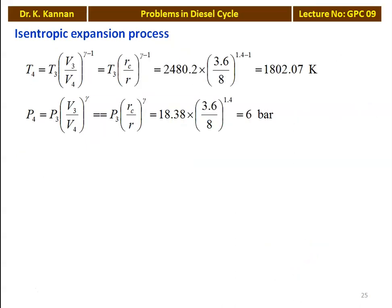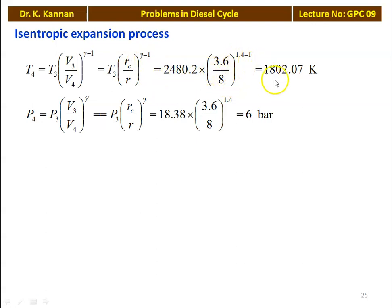For the isentropic expansion process, T4 equals T3 into (V3/V4) to the power gamma minus 1, where V3/V4 equals Rc/R: 2480.2 into (3.6 divided by 8) to the power 0.4 equals 1802.07 Kelvin. And P4 equals P3 into (V3/V4) to the power gamma, which is P3 into (Rc/R) to the power gamma: 18.38 into (3.6 divided by 8) to the power 1.4 equals 6 bar.